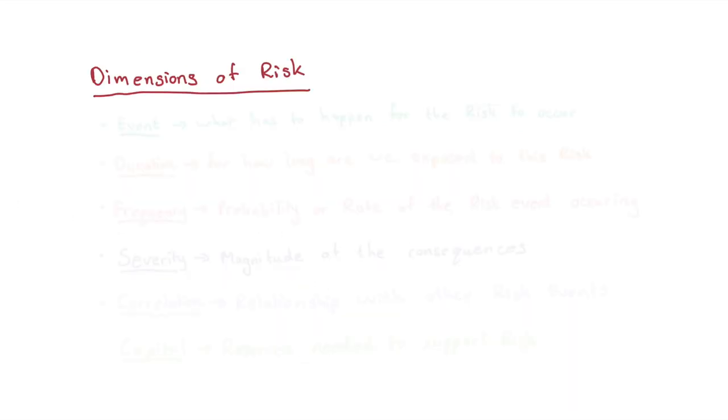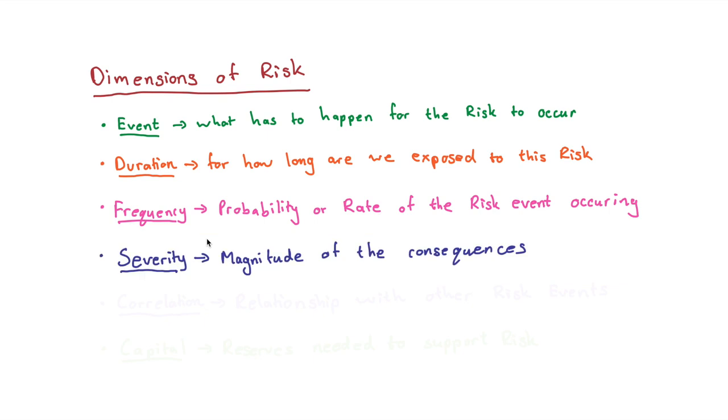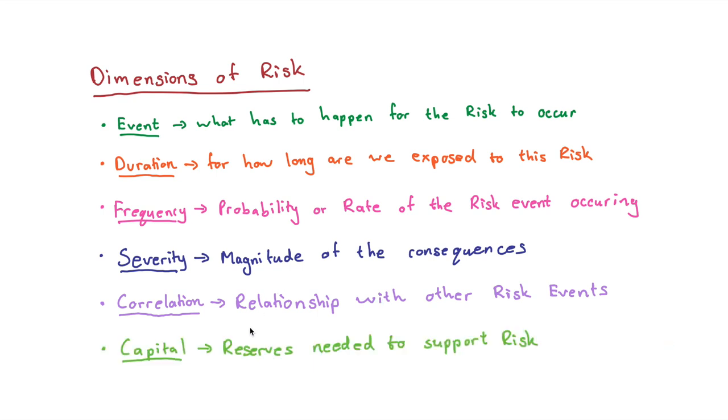What we can also do is look at the dimensions of risk, and risk has six dimensions. The first dimension is the event, what has to happen for the risk to occur. We then have duration, for how long are we exposed to this risk. We also have frequency, which is the probability or rate of the risk event occurring. We also have severity, and this is the magnitude of the consequences, how big or how small. We also have correlation, which is the relationship that the risk has with other risk events. And finally, we have capital, and these are the reserves needed to support the risk.